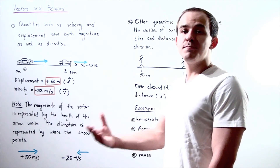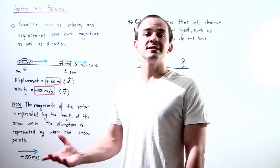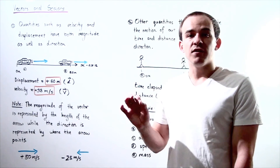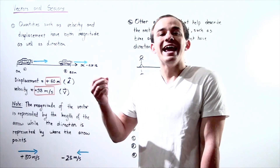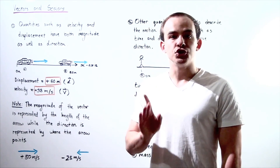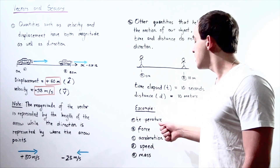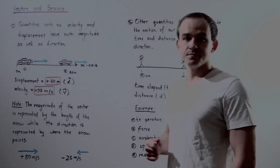Whenever we specify the mass of an object, we give only a number with no direction, just as we specify temperature.